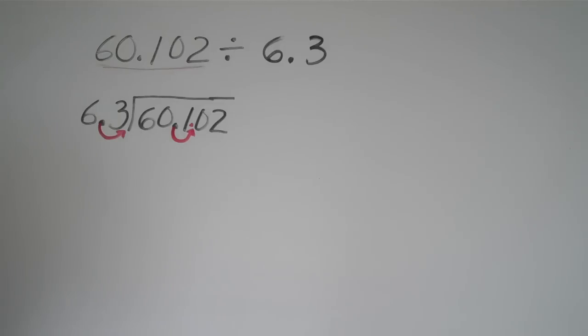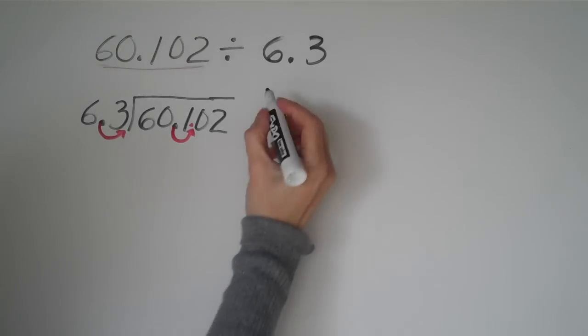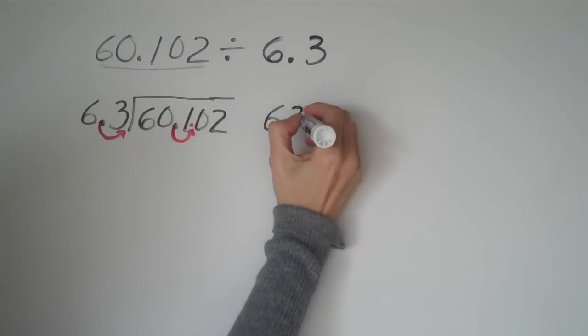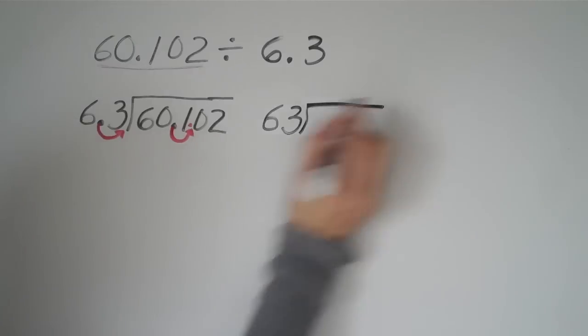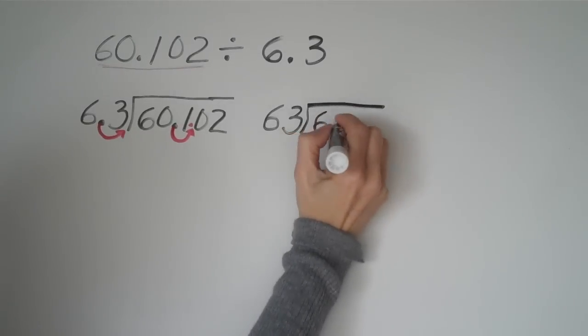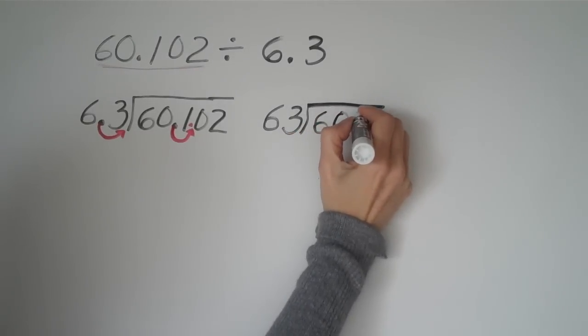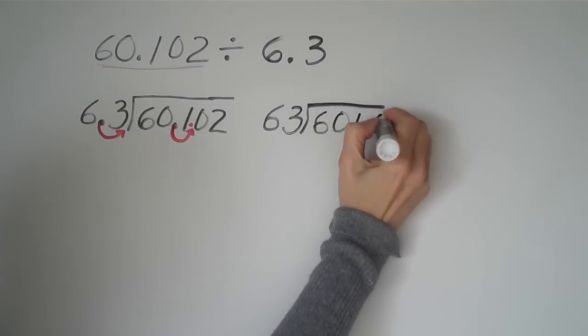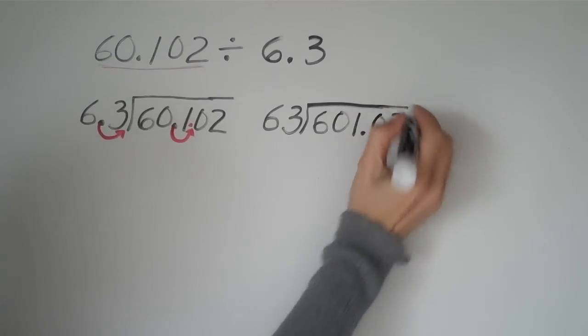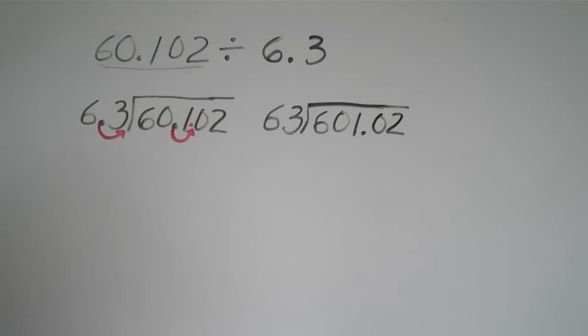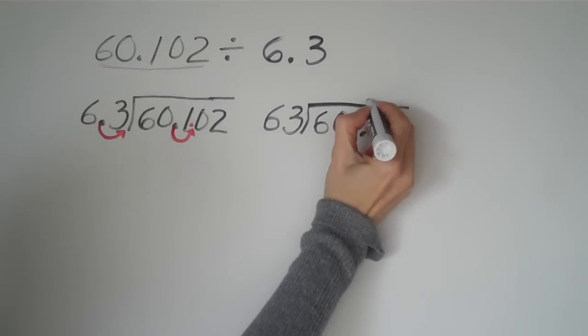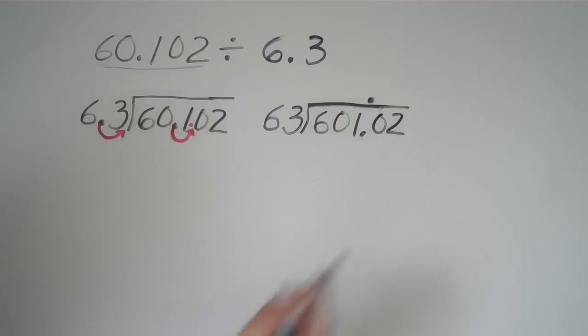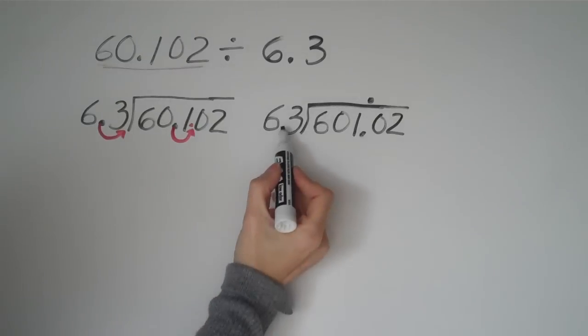So now I'm going to rewrite that problem because it's kind of messy. And we don't want that. So this becomes a 63. And 63 is going to get divided into 601.02. And now we have ourselves a division problem, basically. The first thing we want to do is put that decimal all the way up on top, right there. And then we're going to ask ourselves, how many times do you suppose 63 goes into 601?